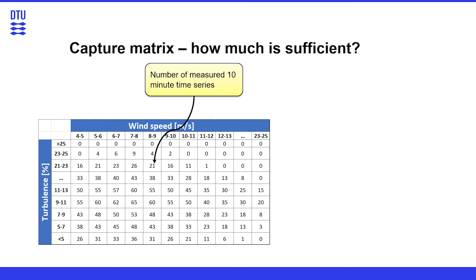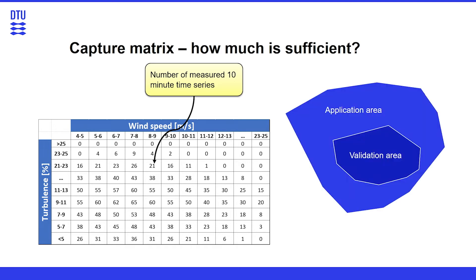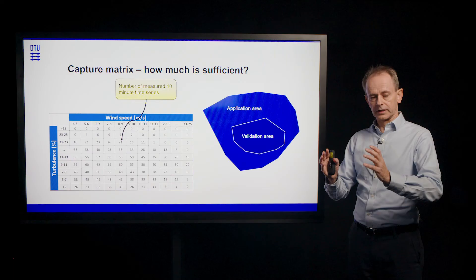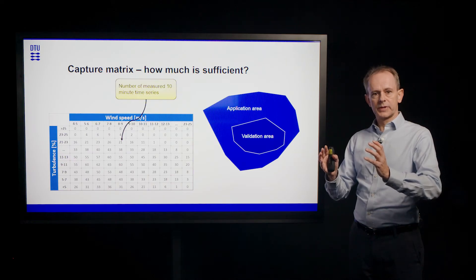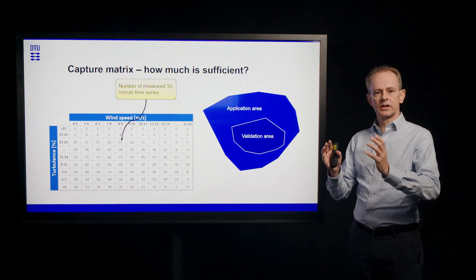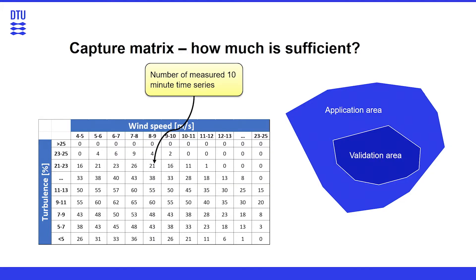The minimum requirements for that are described in the IEC 61400-13 standard. And what we need to ensure now is that the application area is covered as much as possible from the validation area. Meaning, we need to ensure that we have measured as much as possible of the wind speeds in which the turbine will operate during its life cycle.